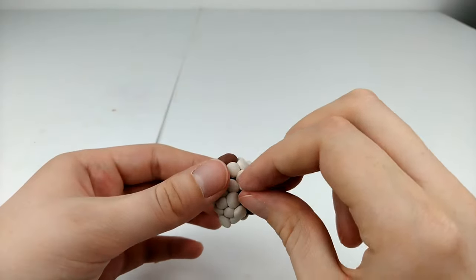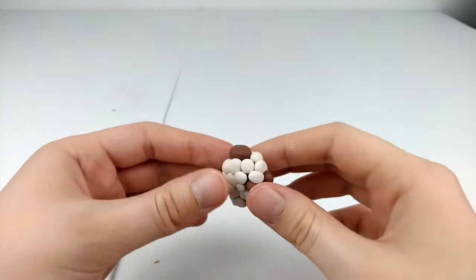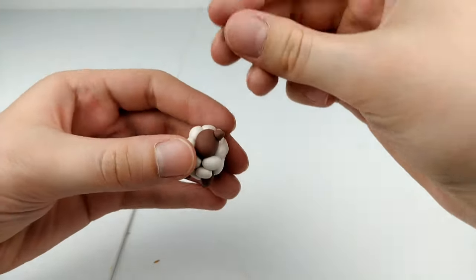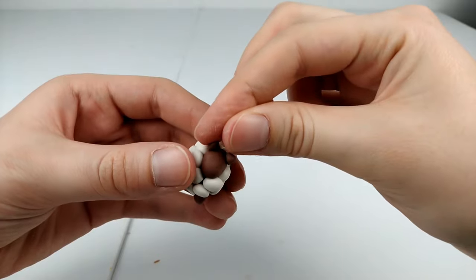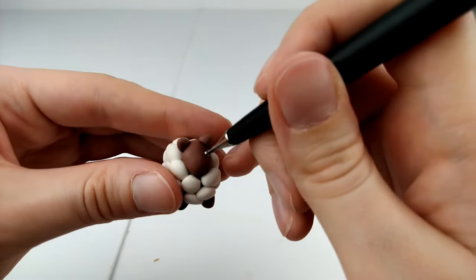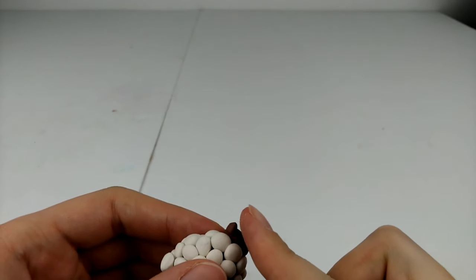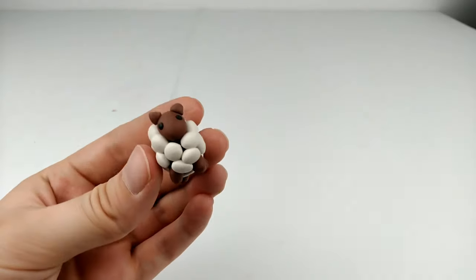And last one. Now let's just give our little guys some ears using a log cut in half. And once again just make two indents on the face and fill those with little black balls of clay for the eyes. And your sheep is done.